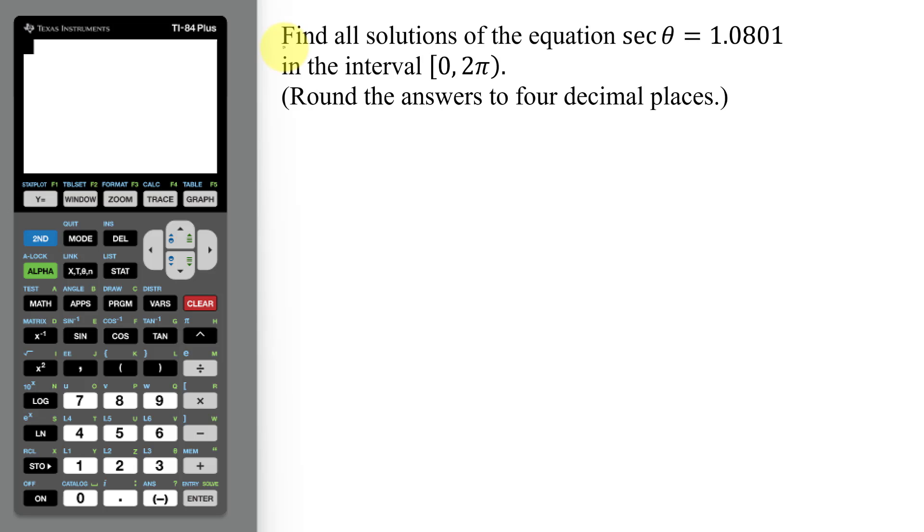In this example, I need to find all solutions of the equation secant of theta equals 1.0801 in the interval 0 to 2π. I also need to round the answers to four decimal places.